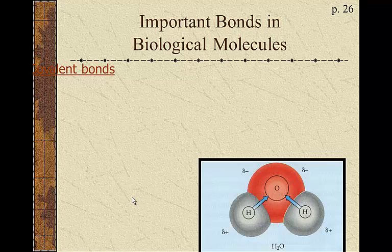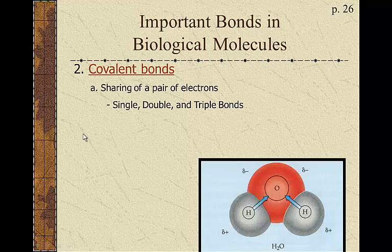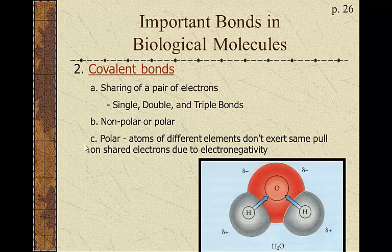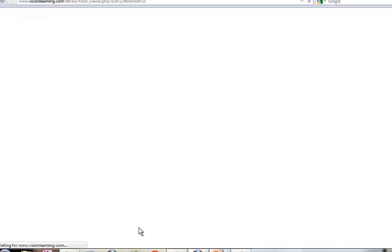Back to important bonds in biological molecules — another classic one is covalent bonds. Covalent bonds are just an association of sharing a pair of electrons. They can form a single, double, or triple bond, sharing multiple pairs of electrons. They have the ability to be polar or non-polar. A polar bond is when atoms of different elements don't exert the same pull on shared electrons due to electronegativity, which we'll talk about in just a moment.